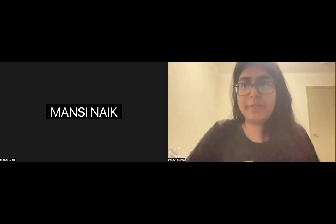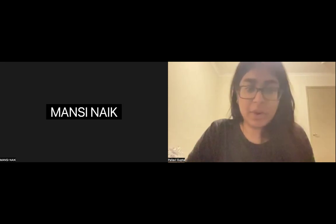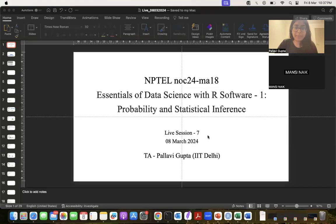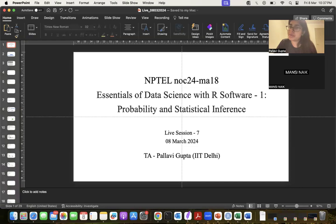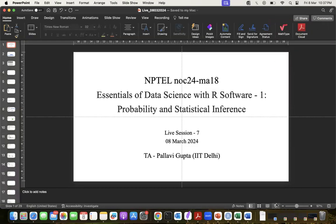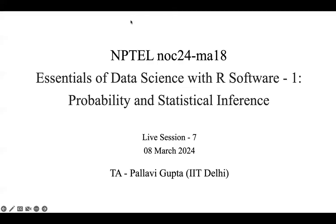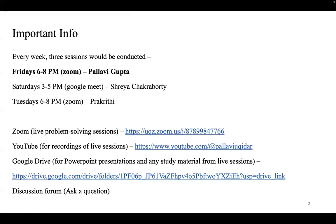Let's begin the session — if people join, well and good, otherwise the session is being recorded so they can watch later. You should be able to see my screen now. Since it's just a few of you here today, feel free to ask questions. Welcome to the seventh session of the NPTEL course: Essentials of Data Science with R Software. This is Part 1, where we are discussing probability and statistical inference.